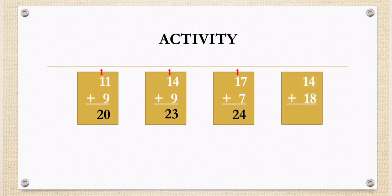Last one: we have 18 plus 14. 8 plus 4, the result is 12. Bring down 2, carry 1. Then there are 3 addends. 1 plus 1 is 2, plus 1 equals 3. The answer of 18 plus 14 is 32.